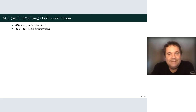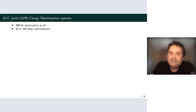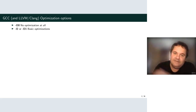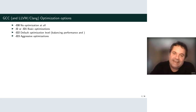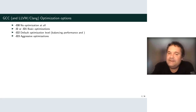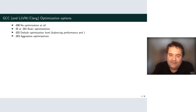GCC has the -O option. O0 disables all optimization. Historically all Unix compilers had -O which is O1, enabling basic optimizations. The default optimization level is O2, which is what most programs are built with, and we have O3 for aggressive optimizations.